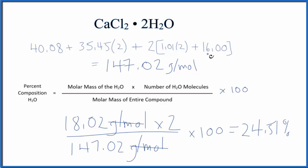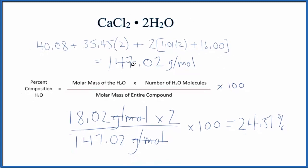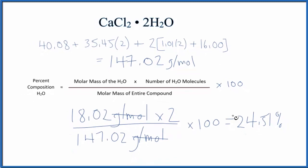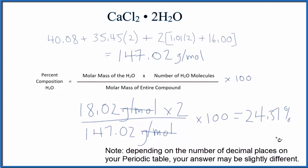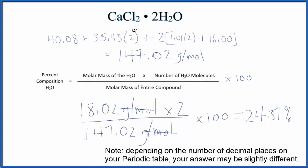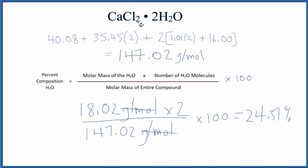Depending on how you rounded the numbers from the periodic table, you might get a slightly different number. This is Dr. B with the percent composition by mass for the water in the calcium chloride dihydrate. Thanks for watching.